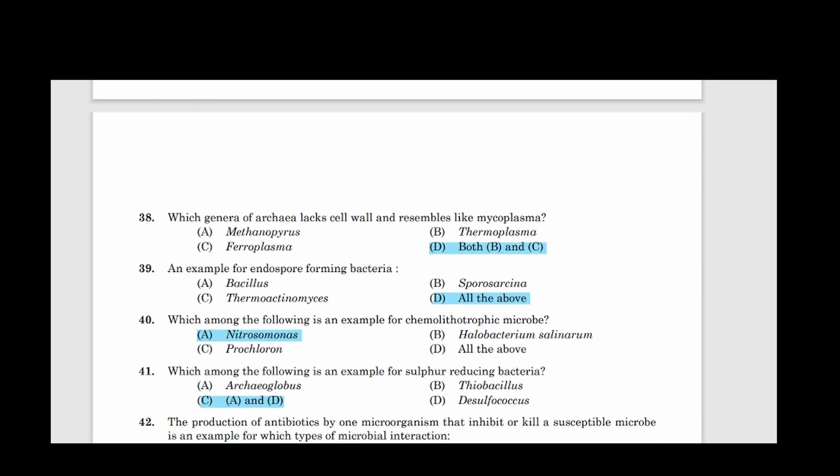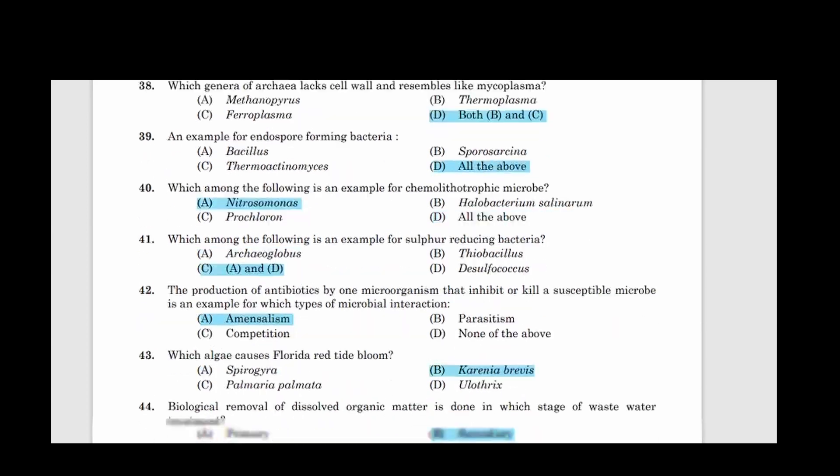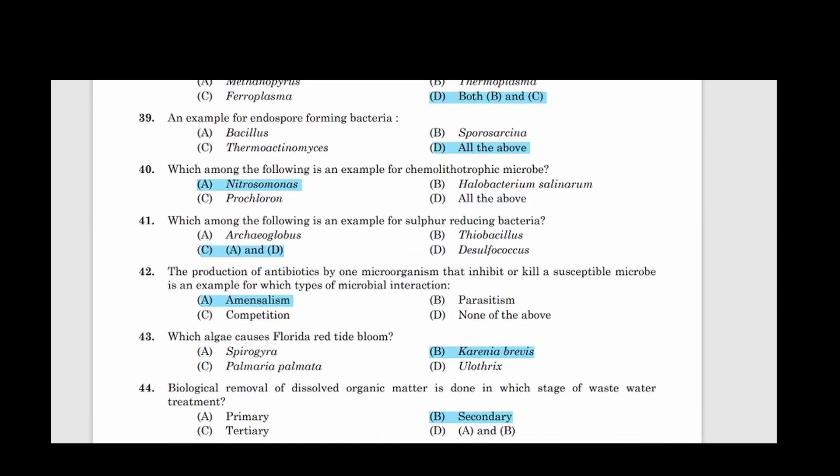Thirty-eight: Which genera of archaea, lag cell wall and resembles like mycoplasma? Answer option D, Both B and C. Thirty-nine: An example for endospore-forming bacteria? Answer option D, All the above. Forty: Which among the following is an example for chemolithotrophic microbe? Answer option A, Nitrosomonas. Forty-one: Which among the following is an example for sulfur-reducing bacteria? Answer option C, A and D.